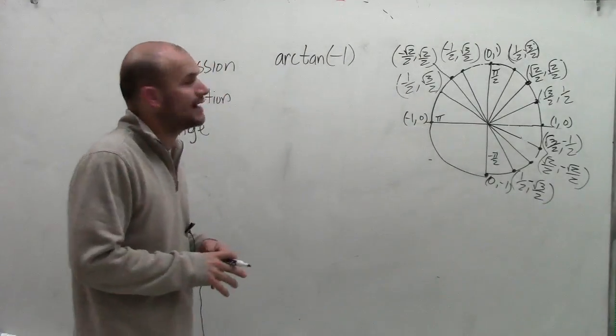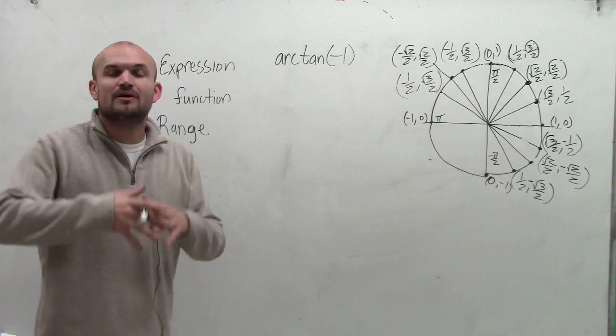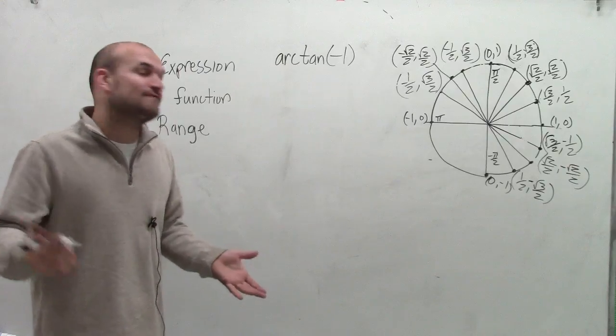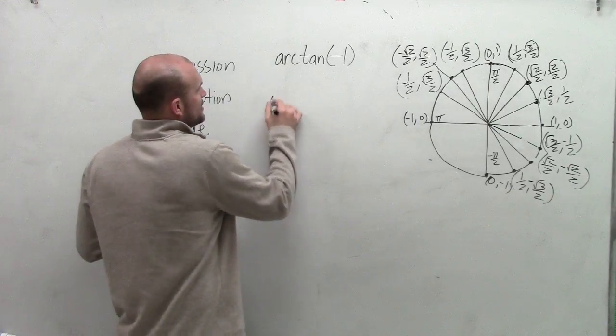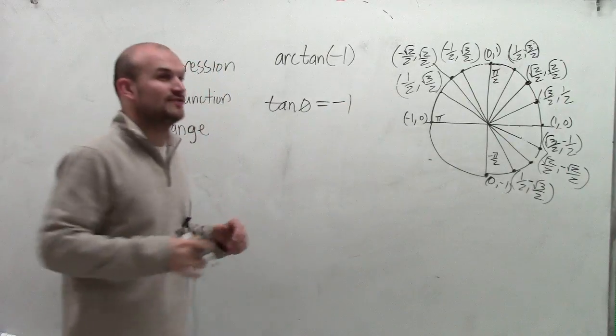Welcome. I'd like to show you how to evaluate the arctan of negative 1. To do that, I like to write out what exactly that function represents. Therefore, that would be the tangent of an angle theta is equal to negative 1.